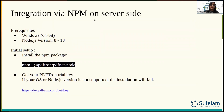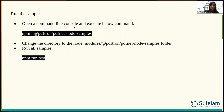Third method: integrate via npm on the server side. The requirements are 64-bit Windows and Node.js version between 8 and 18. For initial startup, run this command to install the npm package. For this, you will need a PDFtron trial key. If your OS or Node.js version is not supported, the installation will fail. You will get your trial key from the provided link. To run the sample, open the command line and execute the command, then change the directory to node_modules/pdftron/PDFNetNode/Samples folder and run npm run test.